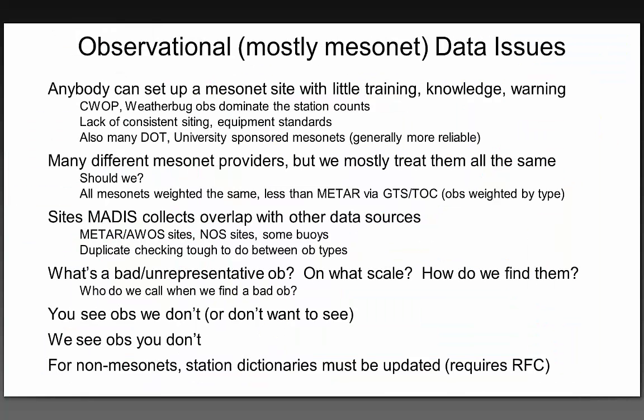Issues with mesonets: we're dealing with all sorts of setups, from university stations to average folks setting up stations in their own backyards. In terms of observation weight, we treat them for the most part all the same — maybe not the greatest idea, but that's what we're doing now. They are given less weight than METAR observations, but can occasionally overwhelm METAR observations. One issue with the mesonet feed is that MADIS tends to collect as much data as it can find, and there are some stations that report as mesonets that also report as other types like METARs and buoys.